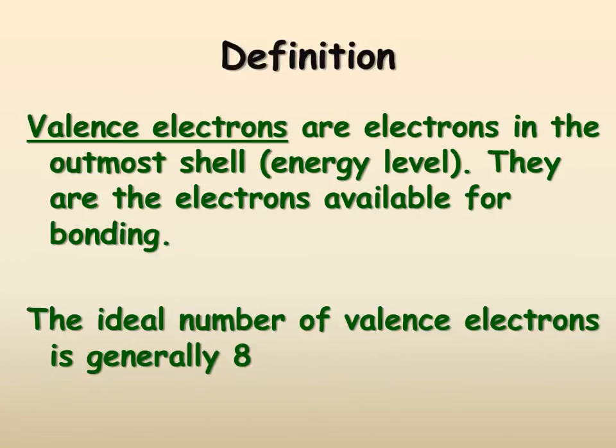Valence electrons by definition are the electrons in the outermost shell. We'll get more into this later as far as how energy relates to this, but for now you just need to know that they are in the outermost shell and that they are the electrons that we can actually use for bonding. The ones on the inner shells are too blocked by the outer shell electrons to be used for bonding.